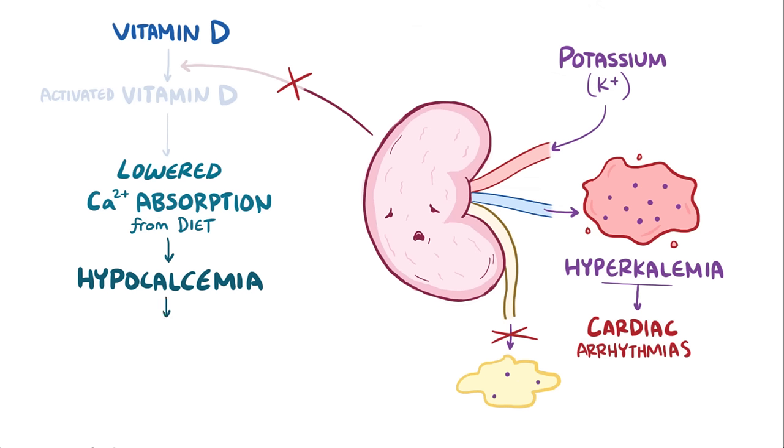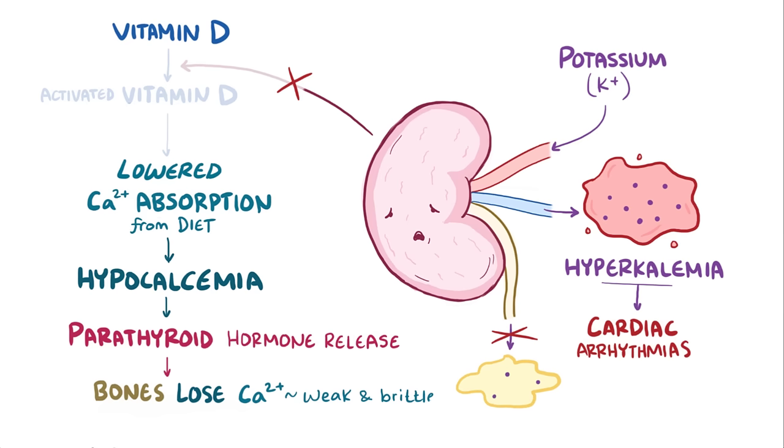As calcium levels in the blood fall, parathyroid hormone is released, which causes the bones to lose calcium. Over time, this resorption of calcium from the bones leaves them weak and brittle, a condition known as renal osteodystrophy.